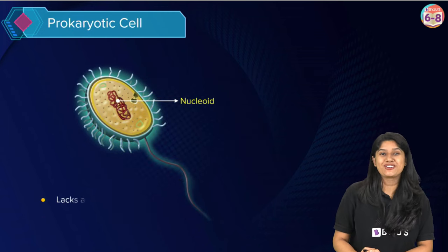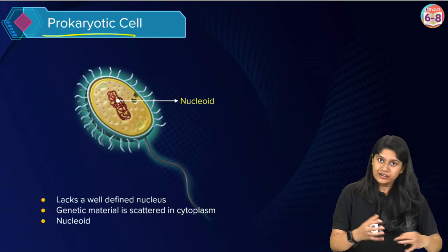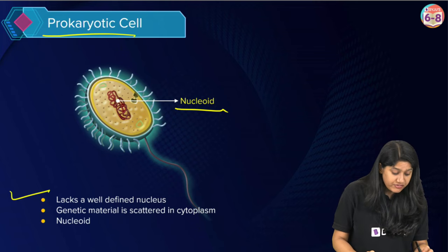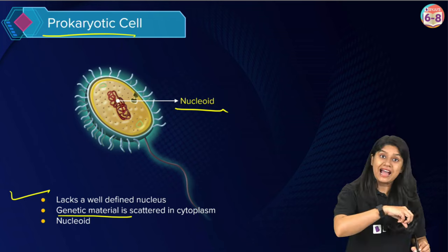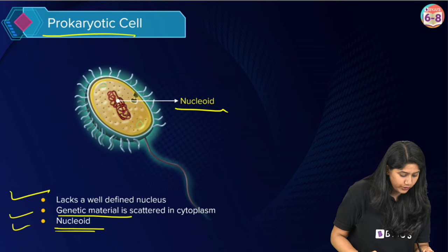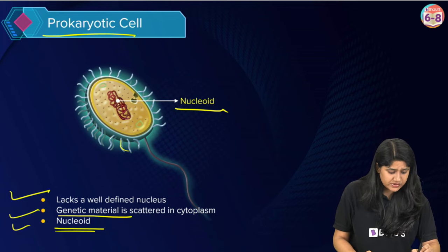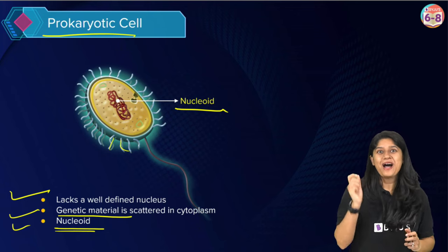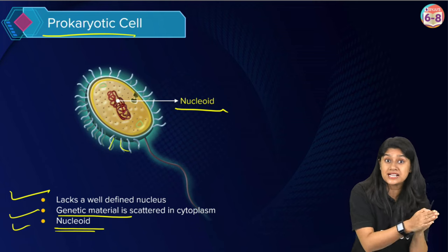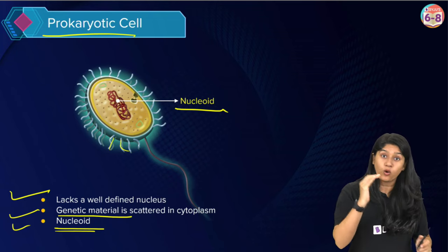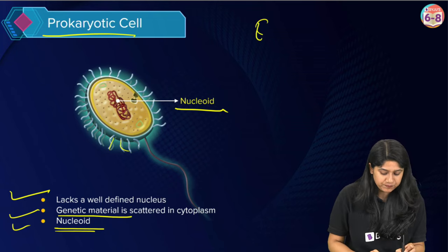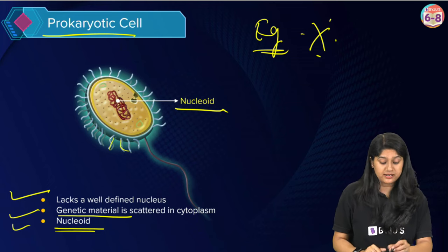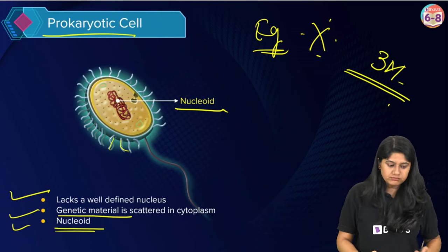Prokaryotic cells are cells where the genetic material is freely suspended in the cell — we call this a nucleoid. They lack a well-defined nucleus and the genetic material is scattered in the cytoplasm. They have flagella and cilia. The most common example of prokaryotic cells is bacteria. When writing about the difference between eukaryotic and prokaryotic cells, always mention these points and always write the example — this can come for three marks.